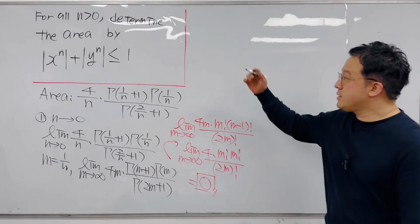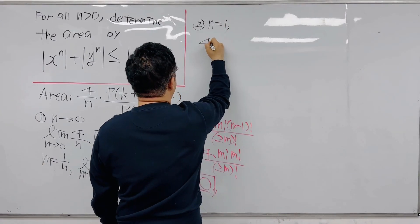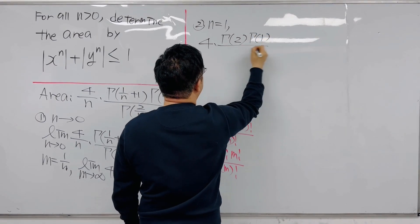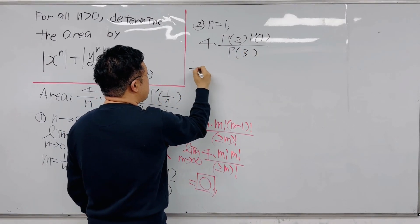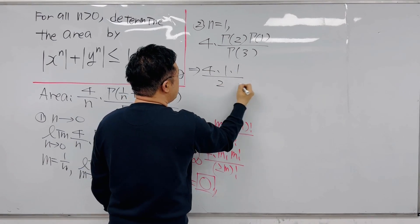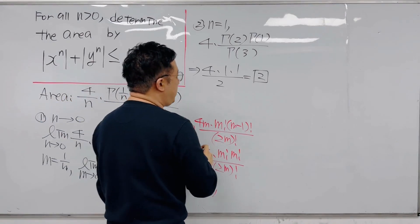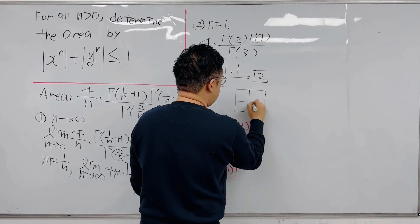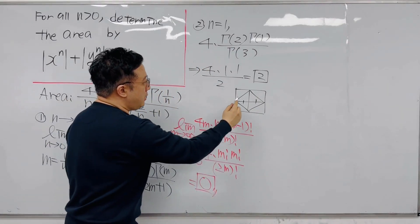Second case: when n = 1. The area is 4 times Γ(2) × Γ(1) / Γ(3), which equals 4 × 1 × 1 / 2 = 2. This corresponds to the situation where the region forms 4 isosceles right triangles with base 1 — essentially a square rotated 45°.